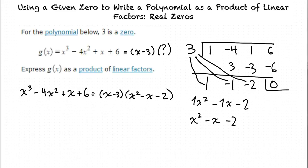Therefore, x cubed minus 4x squared plus x plus 6 equals x minus 3 times the quantity x squared minus x minus 2.